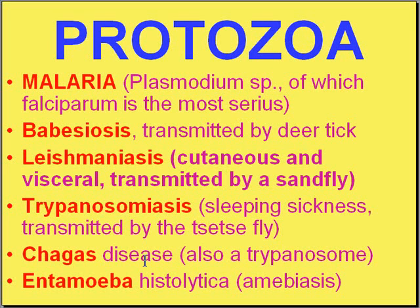Last but not least, we can't forget the amoebas. The amoebas are a common cause of colon infections, diarrheal infections, and large bowel infections. The causative agent is usually Entamoeba histolytica. An Entamoeba histolytica infection — amoebiasis — is usually a colitis, but you have to remember they can also wind up forming abscesses in various places, of which the liver is the most common site.